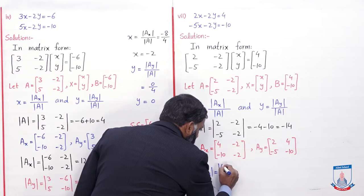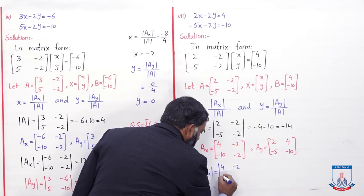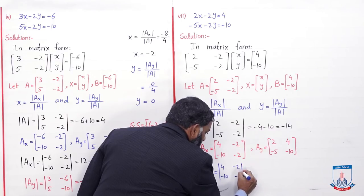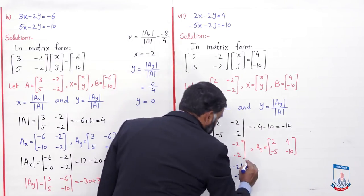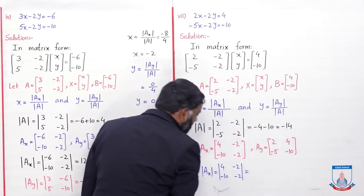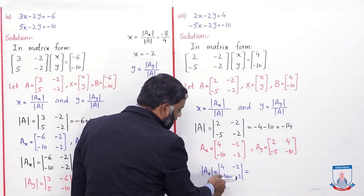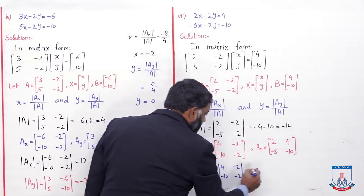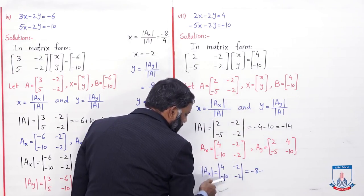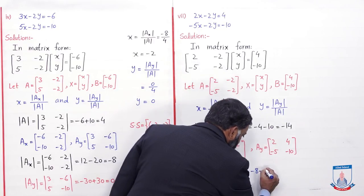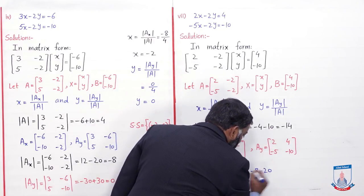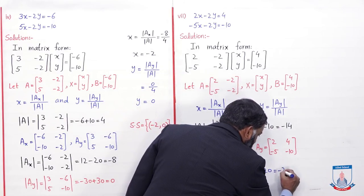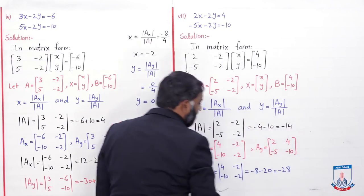Det(Ax) matrix [4, -2; -10, -2]: diagonal entries ko multiply karein — 4 × (minus 2) = minus 8. Minus non-diagonal entries: (minus 2) × (minus 10) = 20. Toh minus 8 minus 20 = minus 28. Det(Ax) = minus 28. Ab det(Ay) find karenge.